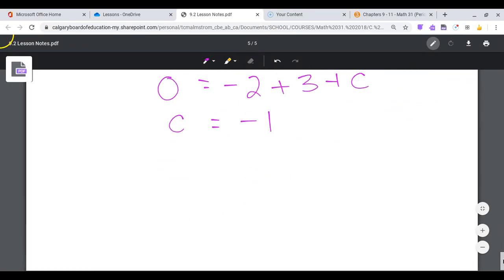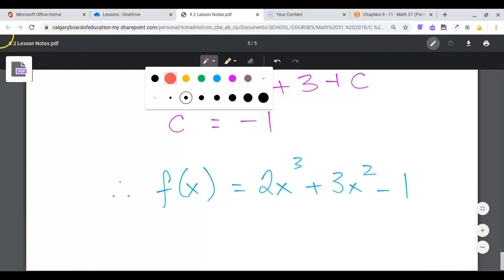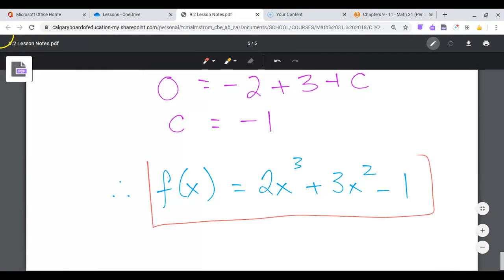And therefore, we have solved for the equation. This is like solving a differential equation. Therefore, f of x or y, whichever you want to write, is equal to 2x cubed plus 3x squared minus 1. Finished! And 9.2 is complete. We'll continue with these similar concepts in 9.3.